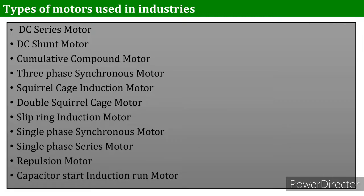The repulsion motor has high starting torque and is capable of wide speed control. It also has high speed at high loads. The repulsion motor is commonly used for drives that require large starting torque and adjustable but constant speed.